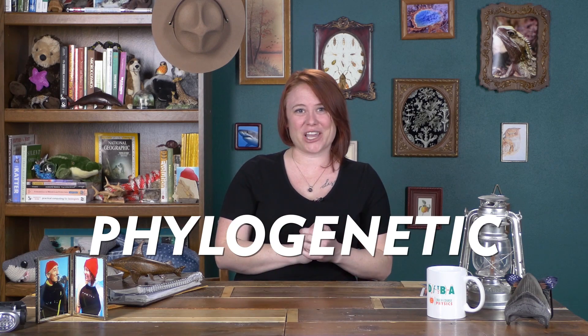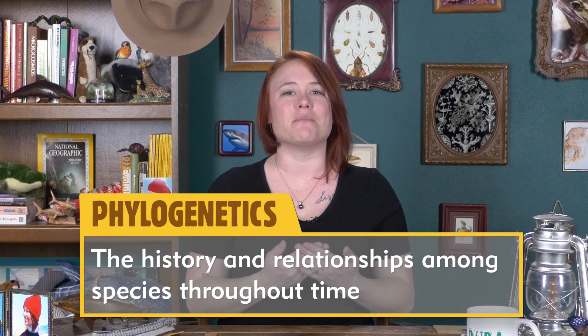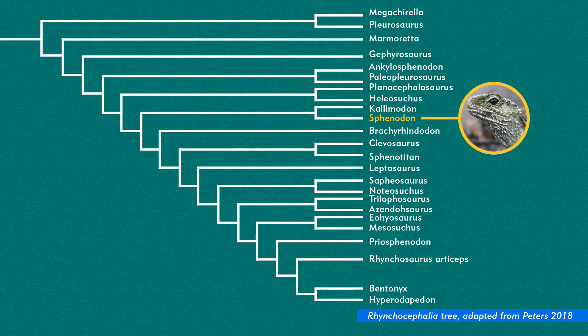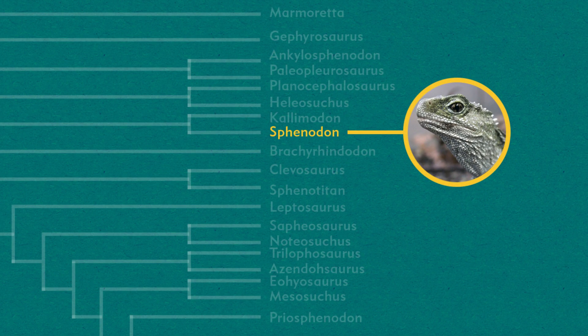This is where the phylogenetic dimension comes in. Phylogenetics is a technical term for the history and relationships among species throughout time. So the phylogenetic dimension of biodiversity is basically considering how unique something is evolutionarily, or how long a certain species has existed since diverging from a common ancestor. Take my tuatara friend back here — this species is the only remaining member of an order of reptiles that lived during the age of dinosaurs, and all except the tuatara went extinct about 60 million years ago. So this species represents a critical piece of phylogenetic biodiversity.